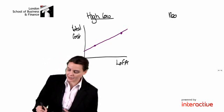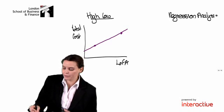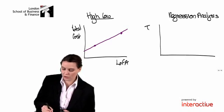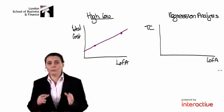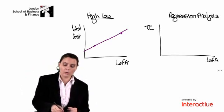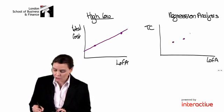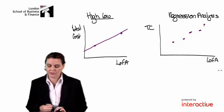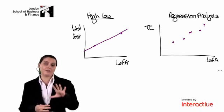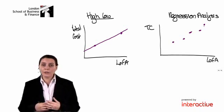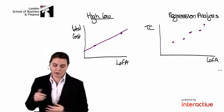If we're applying regression analysis, we are doing something similar. We are assuming again a linear relationship between our total cost and our level of activity. Except with regression analysis now, we don't just look at our lowest and our highest level of activity. If we're applying regression analysis, we will look at all of the information available to us. So if we know what total costs are at five different levels of activity, then we will incorporate all of this information in the calculation of our line of best fit.